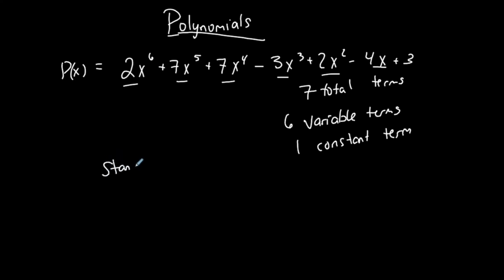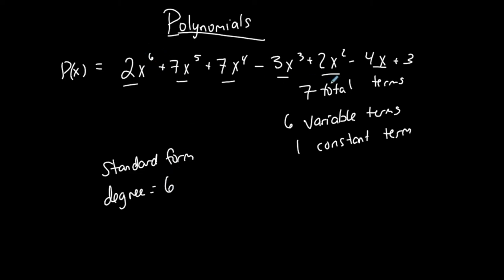This polynomial is in standard form because it starts with the highest exponent and descends from there, going down all the way until we reach a constant term. You don't always have to have a constant term, but as long as you start with the highest exponent in the first term and the exponents descend, you have standard form. The highest exponent is called the degree — in this case the degree is 6, so this is a 6th degree polynomial. The first term, which contains the degree, is called the leading term, and the number in front of it is called the leading coefficient.